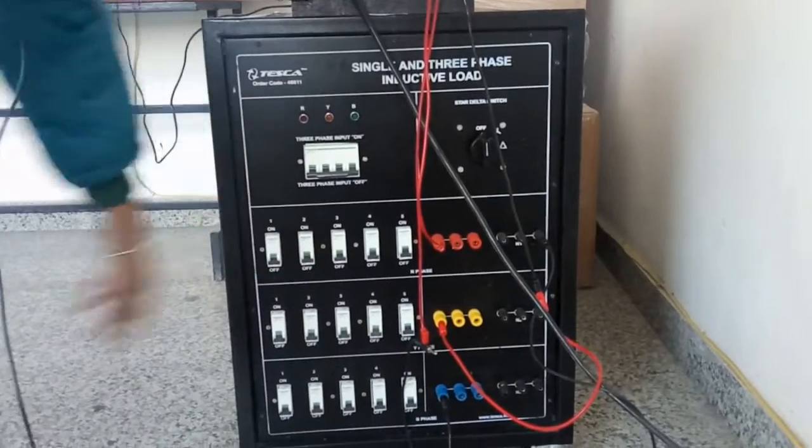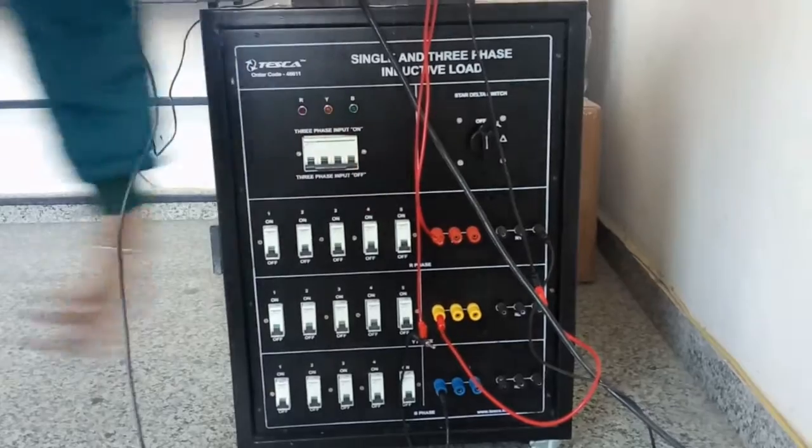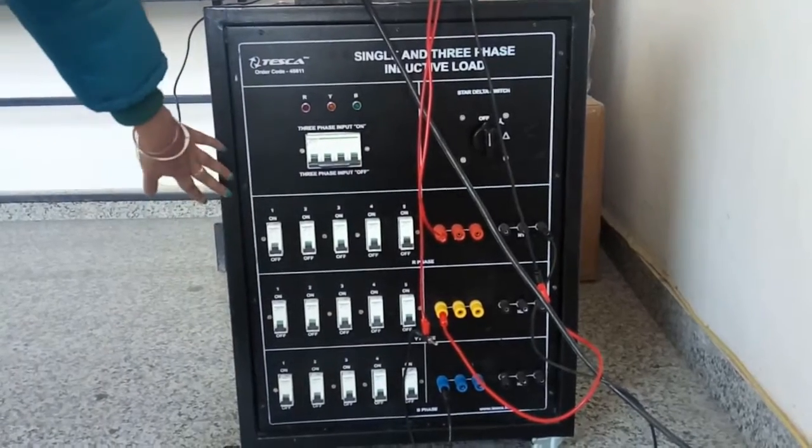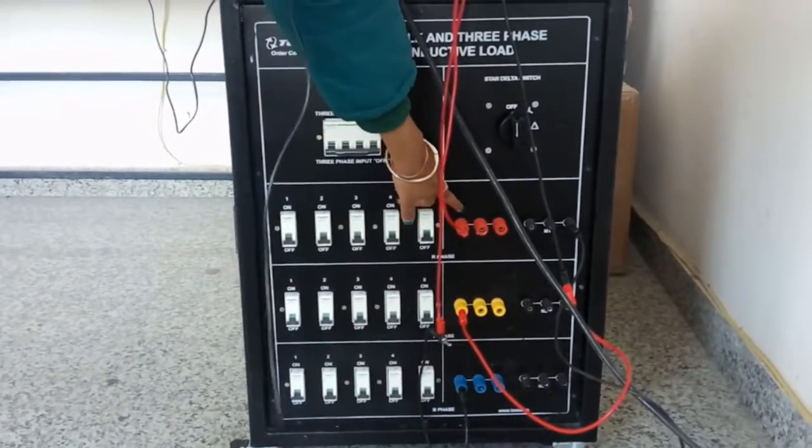There are five MCBs which act as switches per phase. This is the R phase, this is Y phase, and this is B phase. These are the input terminals of R phase, Y phase, and B phase.